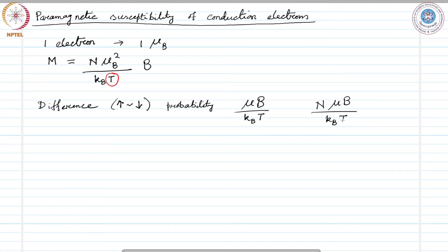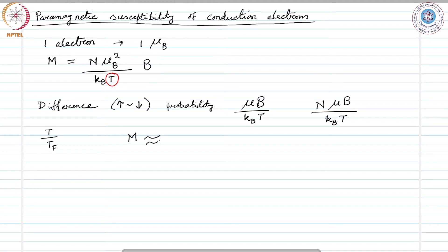Most conduction electrons in a metal have no possibility of turning over when a field is applied, because most orbitals in the Fermi sea with parallel spins are already occupied. Only the electrons which are in the range of k_B T of the top of the Fermi distribution have a chance to turn over in the field. Therefore, only the fraction T over T_F — where T_F is the Fermi temperature — that fraction of the total number of electrons contributes to the susceptibility. If we consider that, then the magnetization can be written approximately as n μ² over k_B T times B times T over T_F.